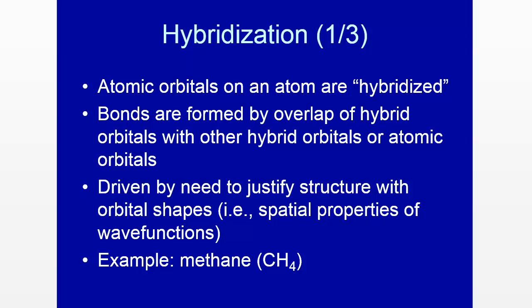Hybridization is an extension of the valence bond theory. In valence bond theory, atomic orbitals — one on each atom — overlap to form a bond. In hybridization, on the other hand, before one overlaps orbitals, one forms hybrid orbitals on an atom by combining atomic orbitals. Then those hybrid orbitals on the atom overlap other hybrid orbitals or atomic orbitals on another atom to form a chemical bond.